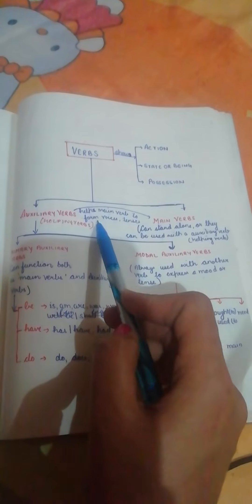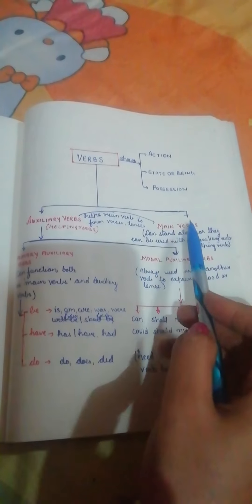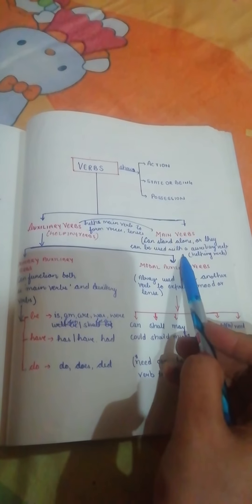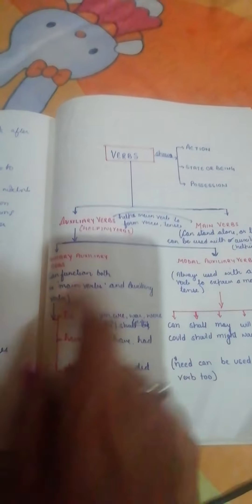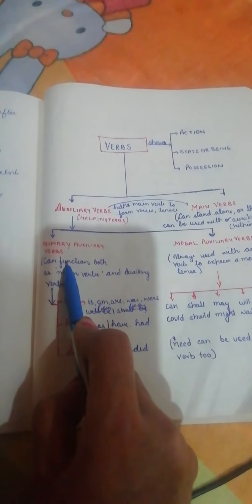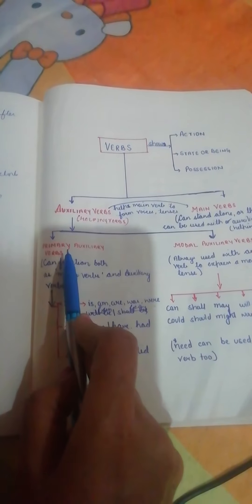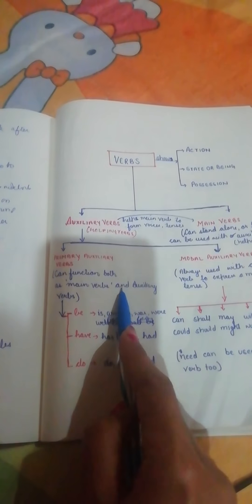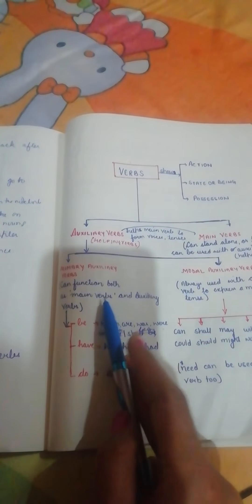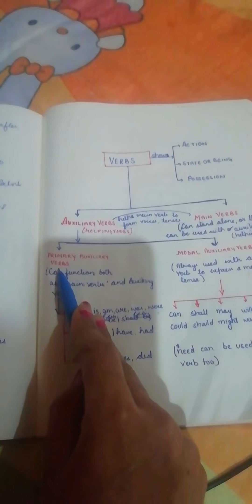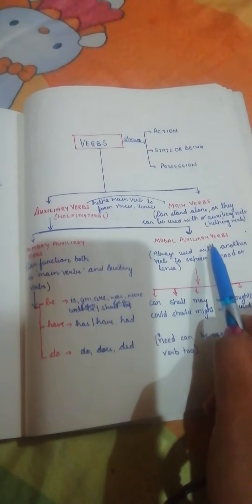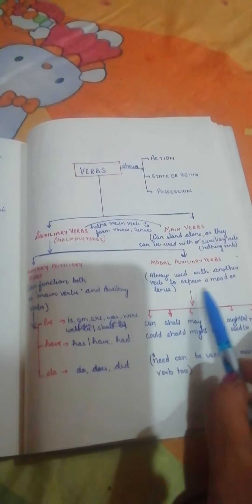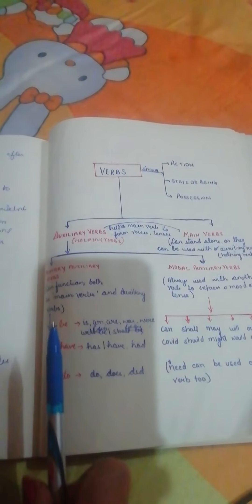So what exactly is the main verb? Main verbs are verbs that can stand alone or be used with auxiliary verbs. In this video I would like to discuss auxiliary verbs. They are further divided into primary auxiliary verbs and modal auxiliary verbs. Primary auxiliary verbs can function both as main verbs and auxiliary verbs — in the absence of another verb they act as the main verb. Modal auxiliary verbs always need another main verb to express a mood or tense.